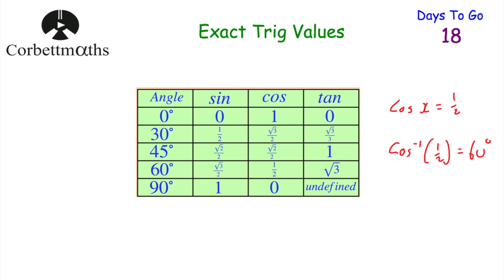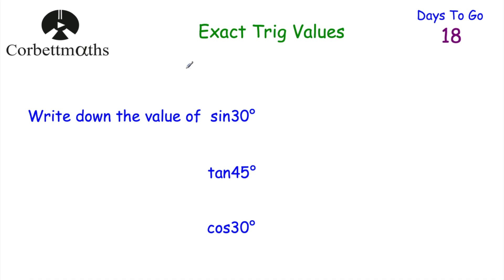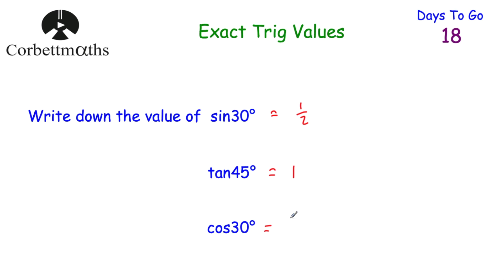Let's have a look at some questions for you to try. Can you write down the value of sin 30°, tan 45°, and cos 30°? Remember, these are non-calculator questions, so do this without your calculator. Sin 30° = 1/2, tan 45° = 1, and cos 30° = √3/2. Well done if you got those.